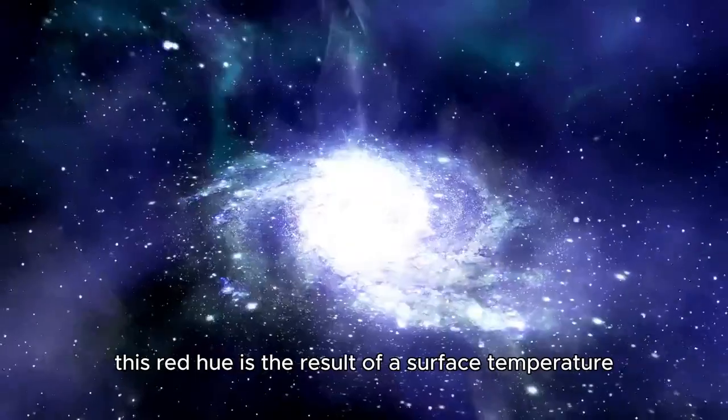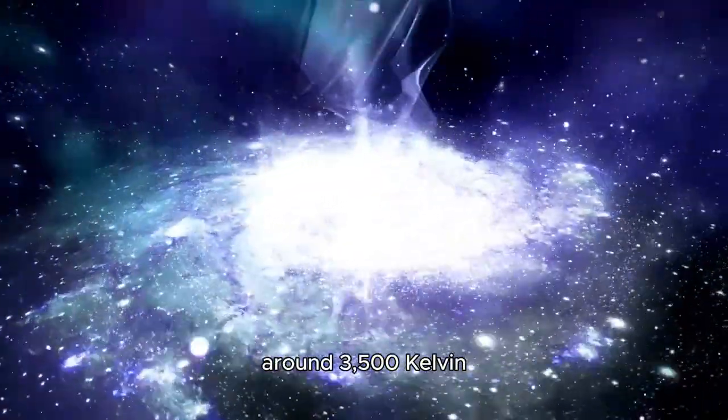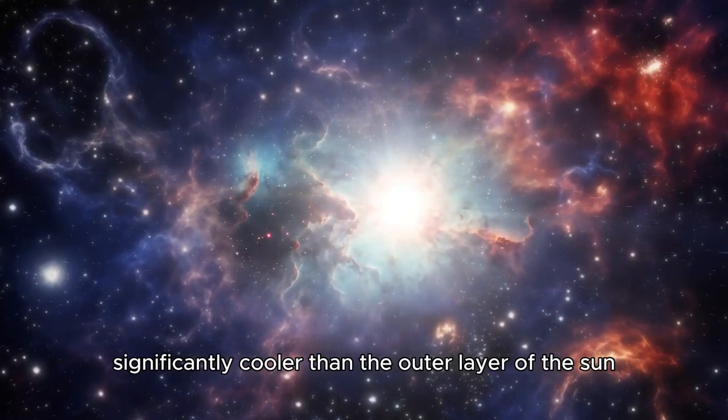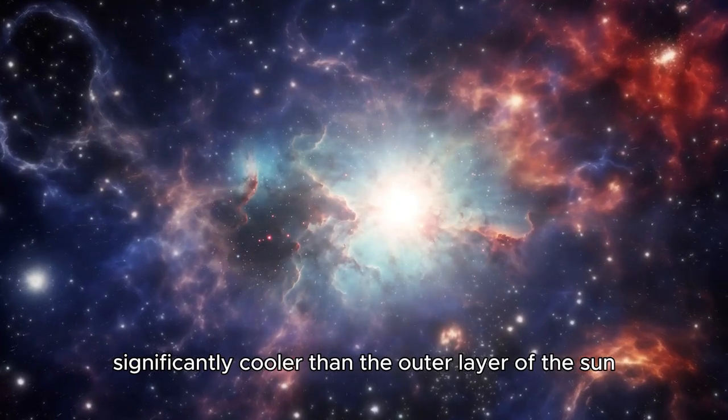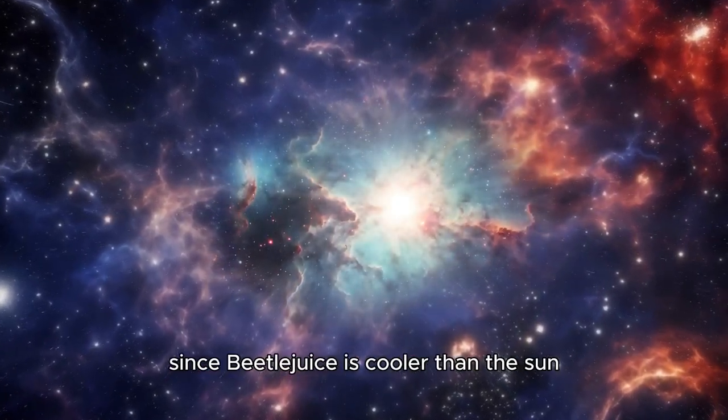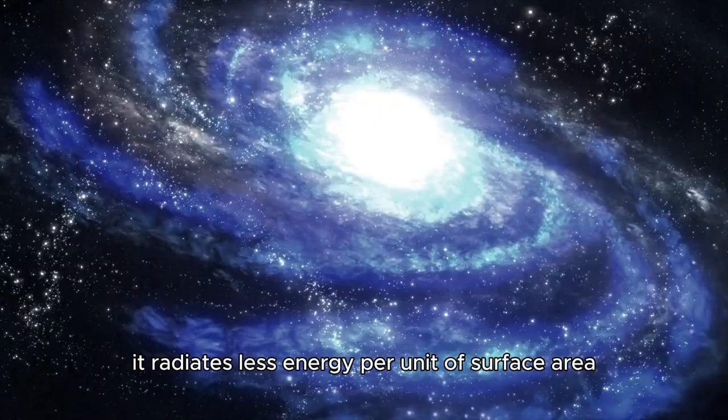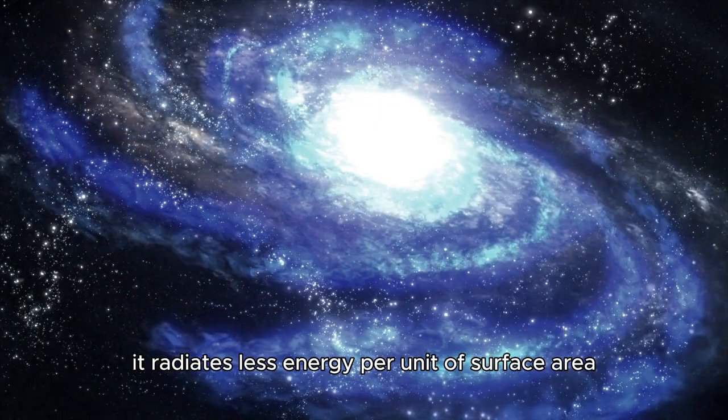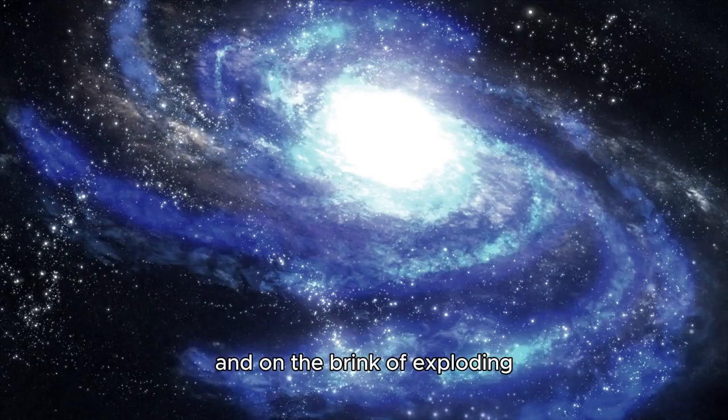This red hue is the result of a surface temperature around 3,500 Kelvin, significantly cooler than the outer layer of the sun, which is around 5,500 Kelvin. Since Betelgeuse is cooler than the sun, it radiates less energy per unit of surface area, even though it is much larger and on the brink of exploding.